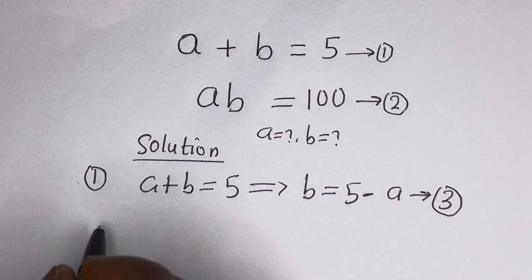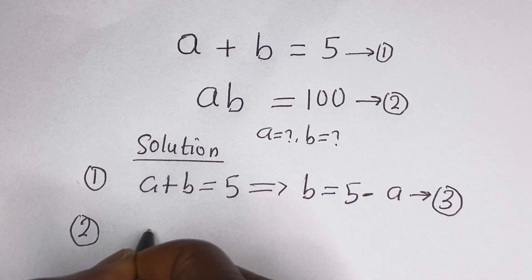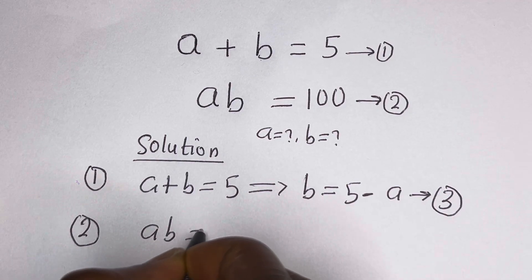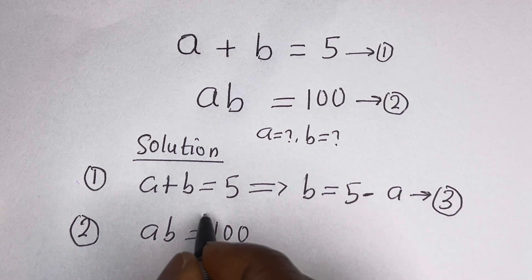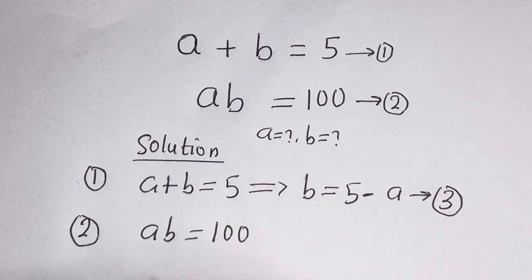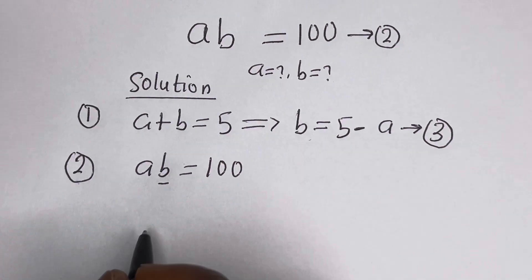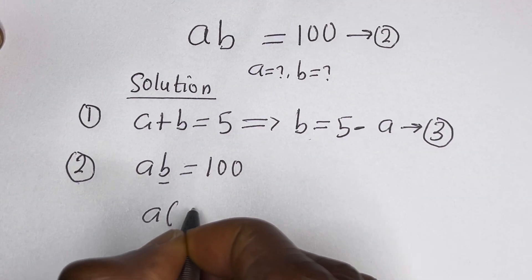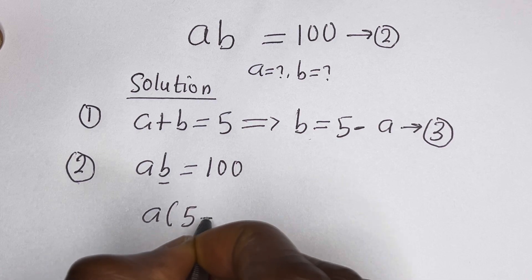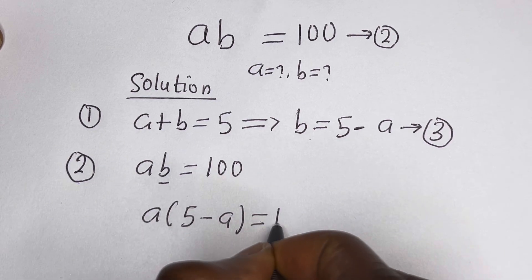Also from equation 2, AB is equal to 100. Let us substitute equation 3 for B here. This is simply now A bracket (5 minus A) is equal to 100.